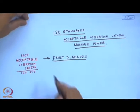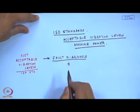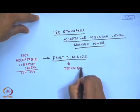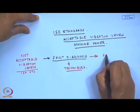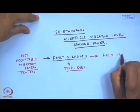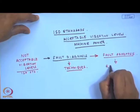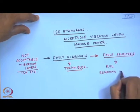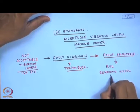Once we have such a non-acceptable vibration level, we will do the fault diagnosis, and in this series of 40 lectures we have told you some of the techniques. And of course, this is beyond the scope of this lecture, but people do the fault prognosis through mathematical models to find out what is the RUL — remaining useful life.